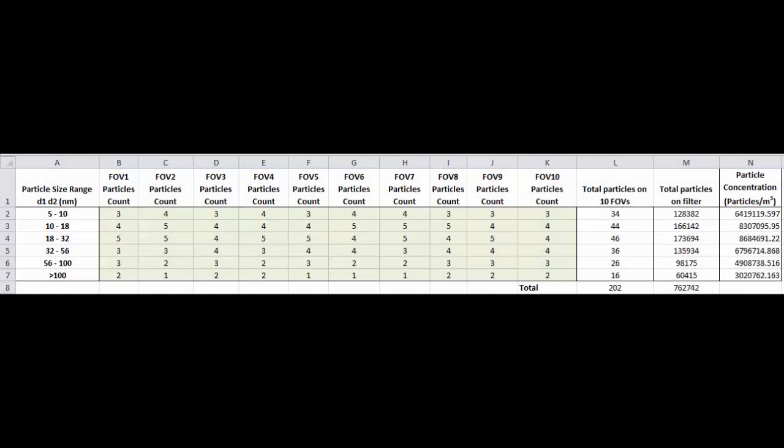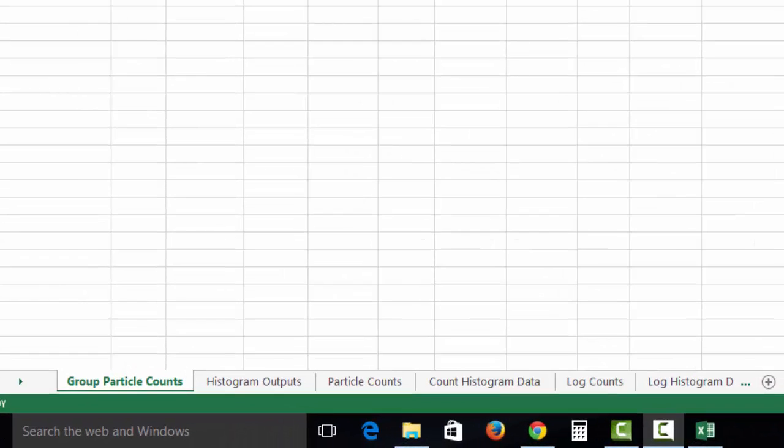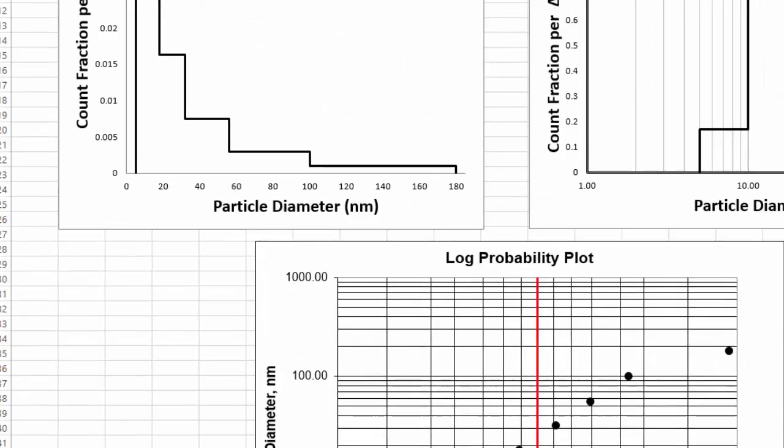The class should then come together and add the distributions from all of the field of view images to the Excel sheet provided with this module. Once this is complete, you can click on the second tab on the bottom labeled Histogram Output. There you can see the first graph, which is a histogram of count fraction per micrometer versus particle size.